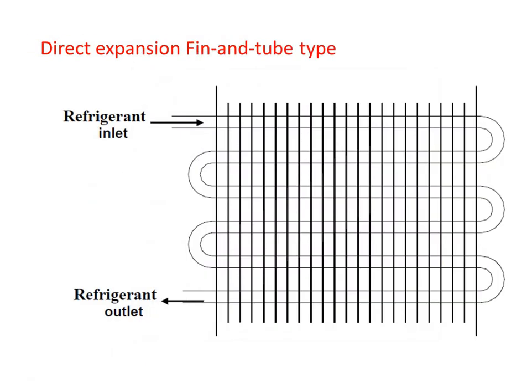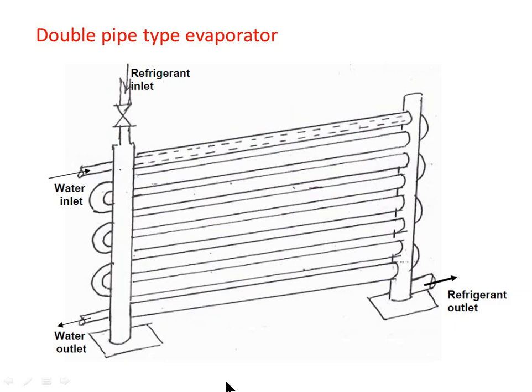Next are the direct expansion fin-and-tube type evaporators — plate fins with tubes embedded in between them. This is the refrigerant inlet and refrigerant outlet. The working of this type is much similar to the fin-and-tube type condenser. Next is the double pipe type evaporator, whose working is also similar to the double pipe type condenser.